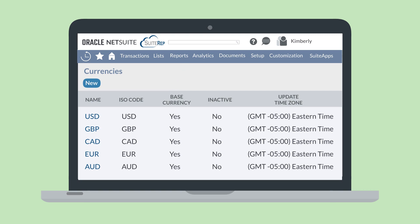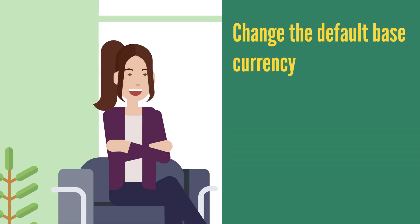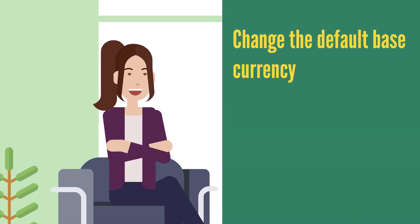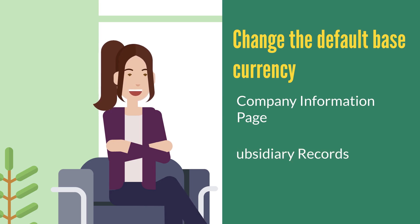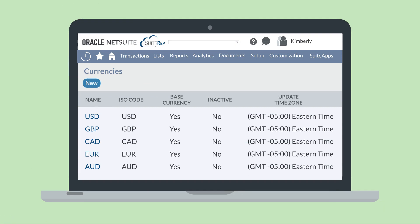For most companies, this will already be accurate since NetSuite initially pulls your base currency from the country edition of NetSuite you're using. If, however, you need to change the default base currency, you would do that on the company information page if you do not use One World, or on each subsidiary record if you do use One World. Once any transactions have been saved on a subsidiary, the base currency can no longer be changed.